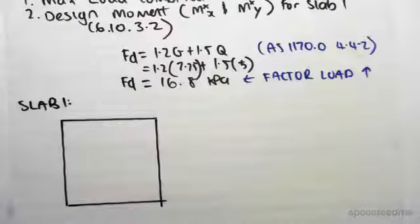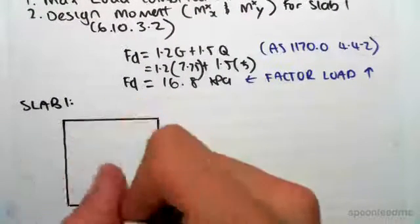So we need to know the lx and ly value. So they're the lengths of the short and long span. Now because it's a square, it doesn't really matter...